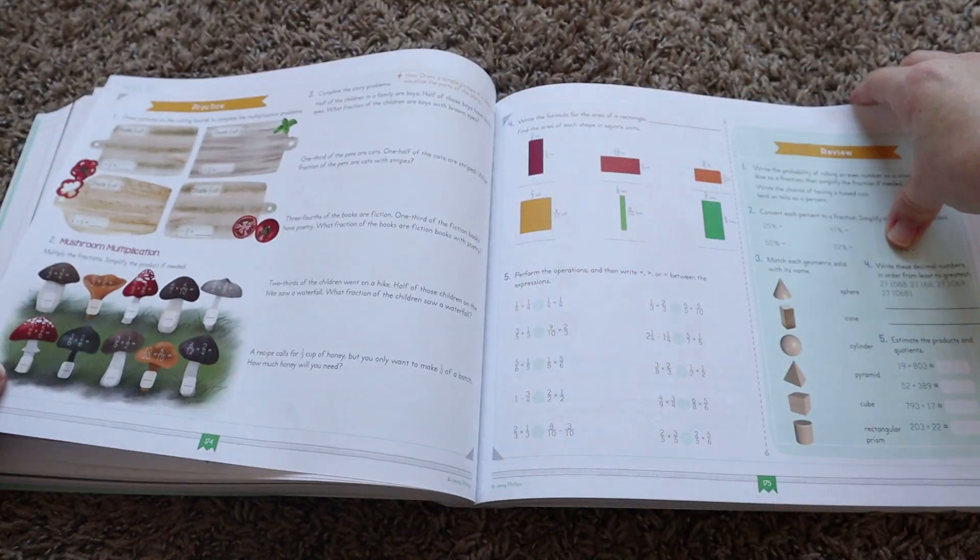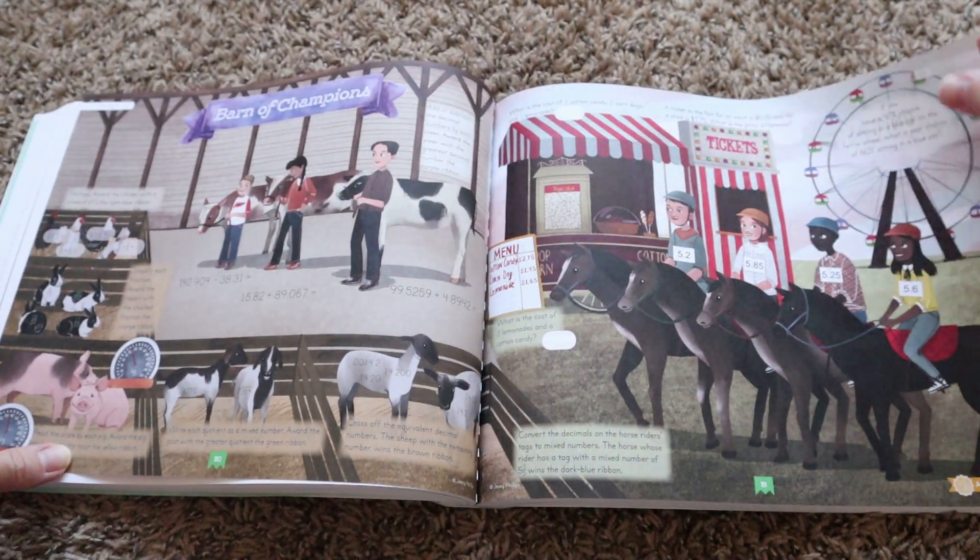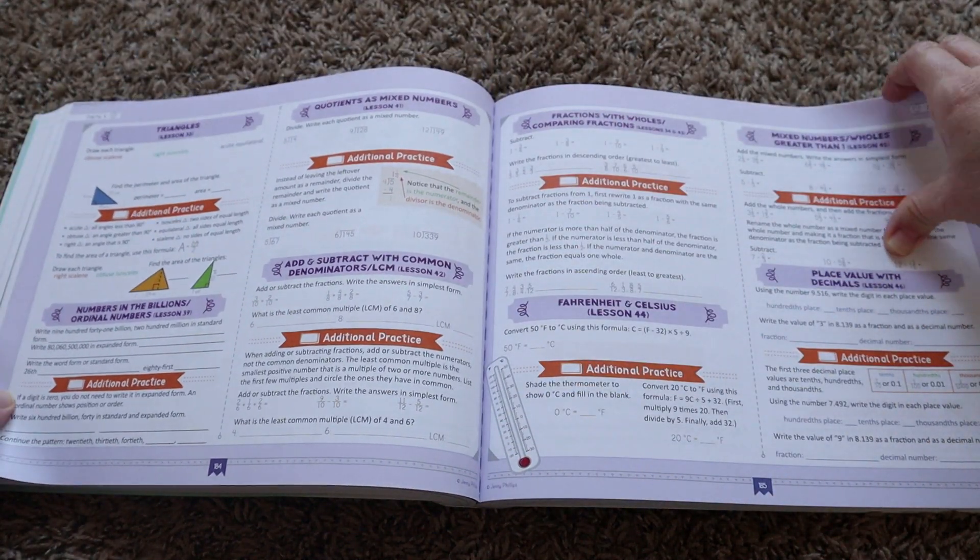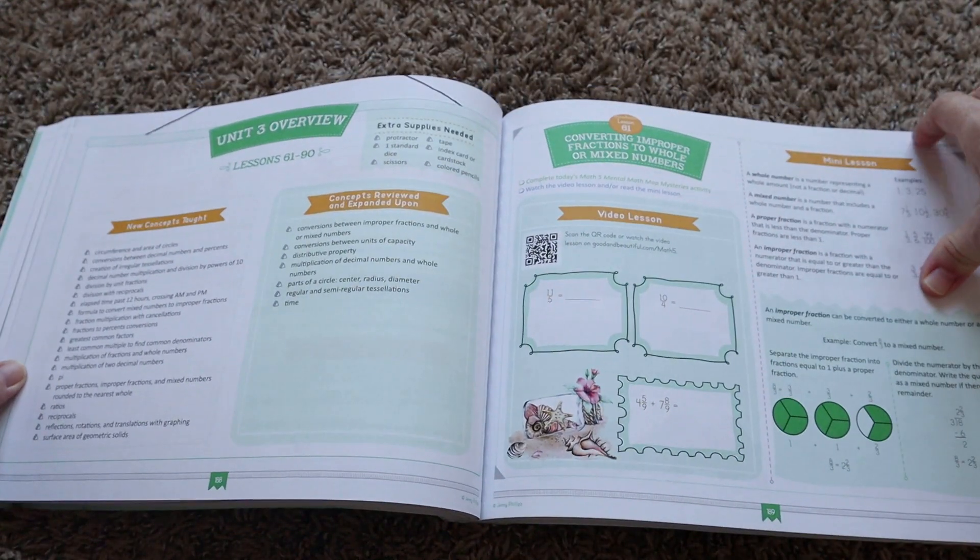And like I mentioned, there are four units in this curriculum. And so with that, there are also four unit assessments. And that's also going to be about two, the last two lessons of the book.